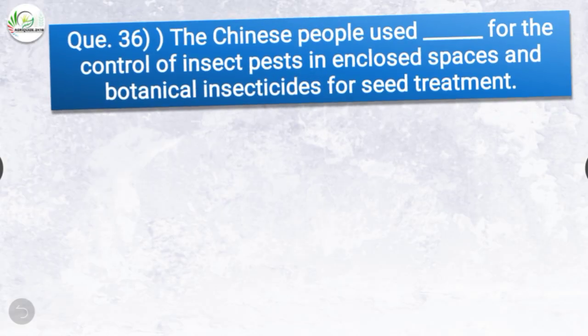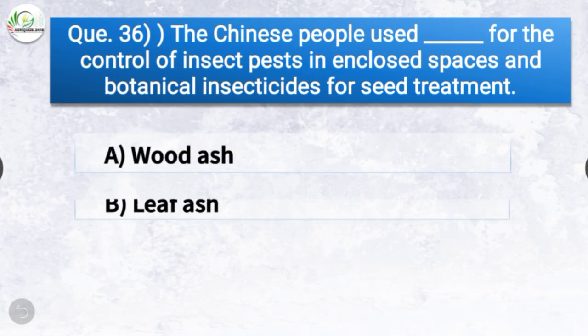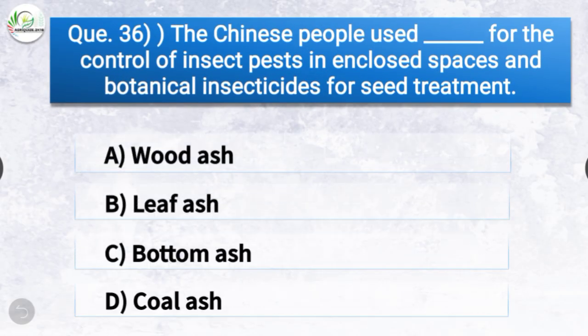Question number thirty-six: The Chinese people used dash for the control of insect pests in enclosed spaces and botanical insecticides for seed treatment. The correct answer is option A, wood ash — the Chinese people used wood ash for the control of insect pests in enclosed spaces and botanical insecticides for seed treatment.